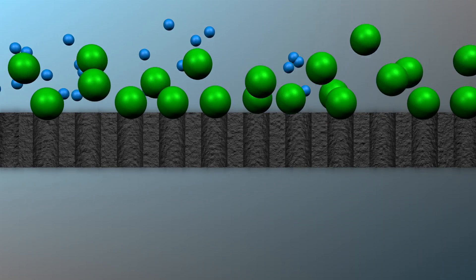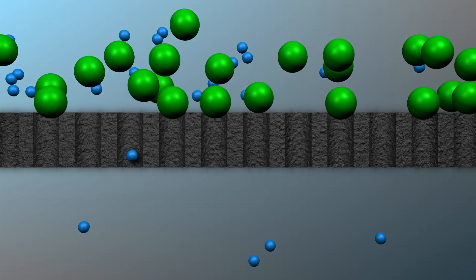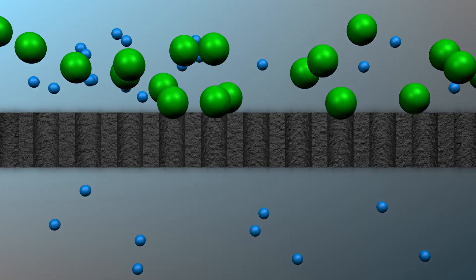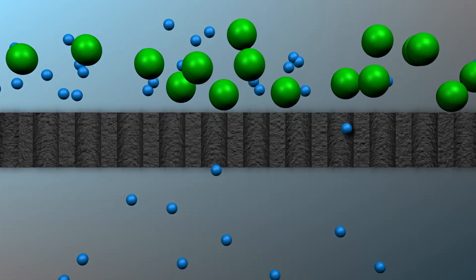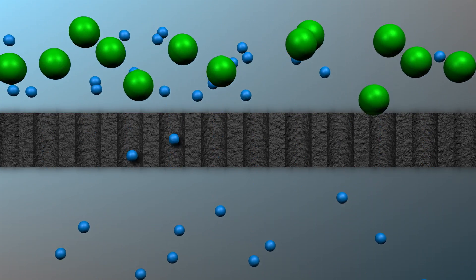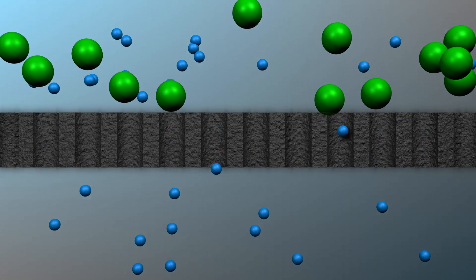As this diafiltration step proceeds, the buffer solution that's being added to the feed replaces the buffer solution that the GFP was originally in, effectively removing any remaining salt as well.